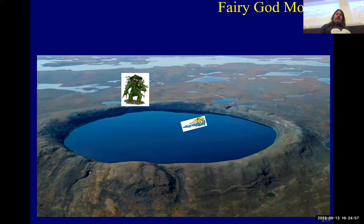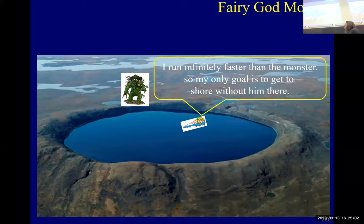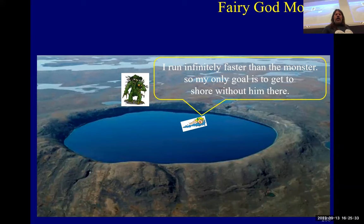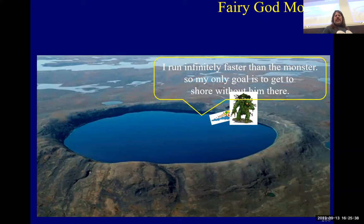So what you have is a round lake, and you are swimming in the lake, and the monster is on the shore of the lake — and the monster wants to eat you. You can run infinitely faster than the monster on land, so if you're on shore and he's not there, you can get away. But the problem is if he's waiting on shore when you land, you get eaten. He's going to come over and try to eat you.